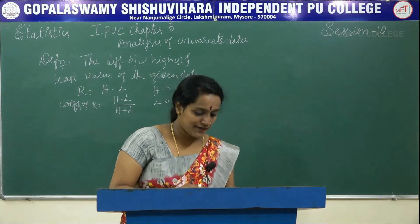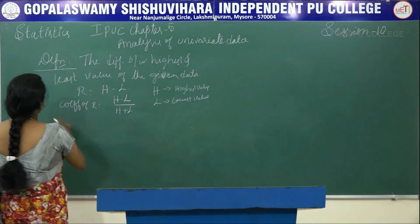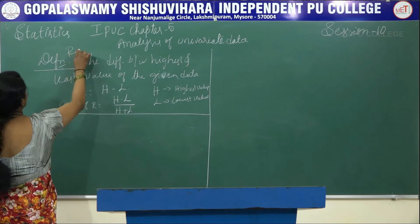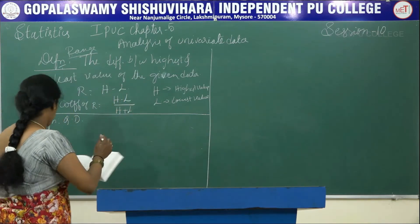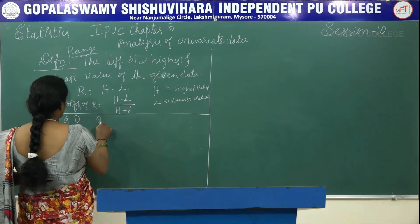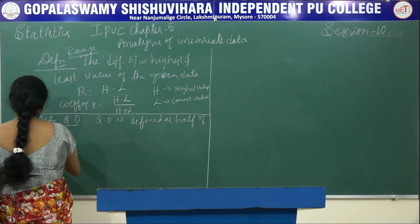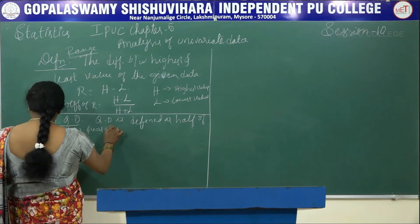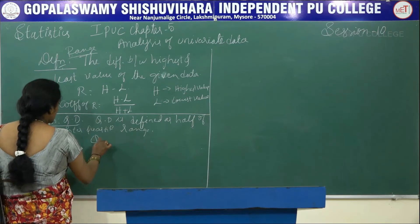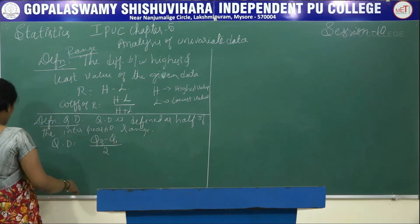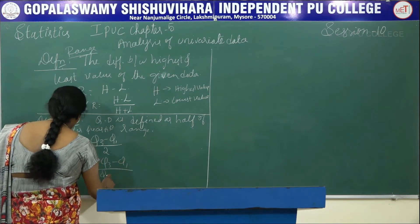The second measure is quartile deviation. Quartile deviation is defined as half of the interquartile range. It is denoted by QD, and the formula is QD equals Q3 minus Q1 divided by 2. The relative measure, or coefficient of QD, is Q3 minus Q1 divided by Q3 plus Q1.